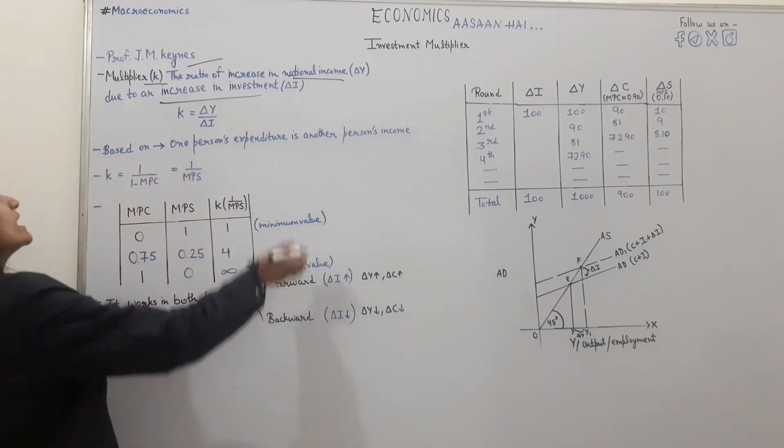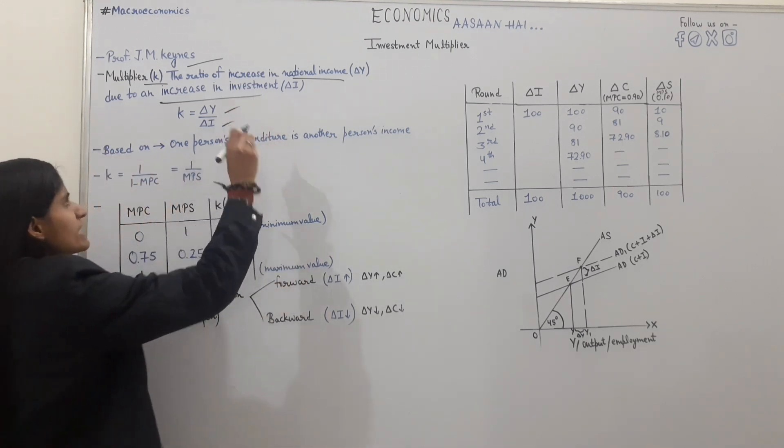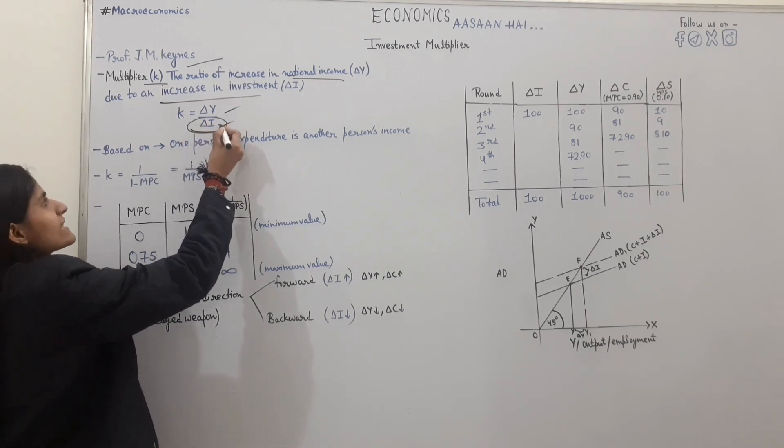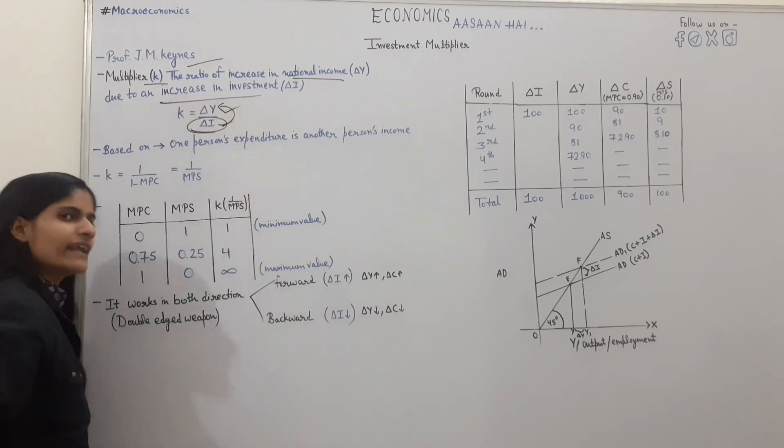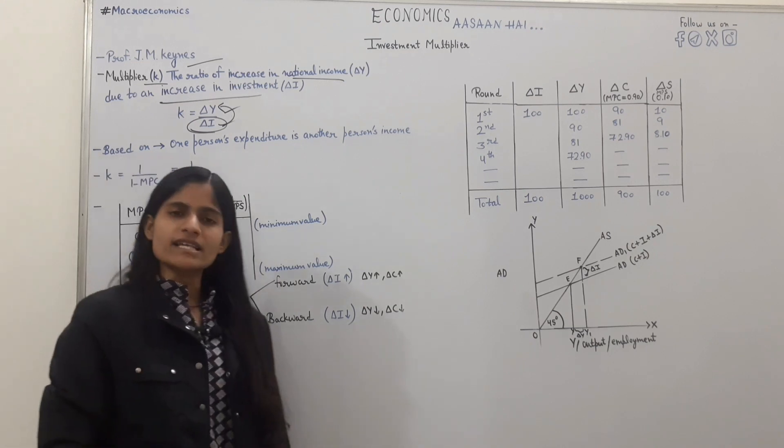What will we do from the multiplier? The ratio of increase in national income. How do we look at K? Change in income upon change in investment. Investment will be repeated.